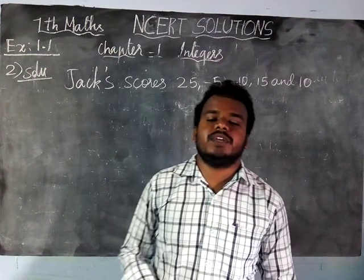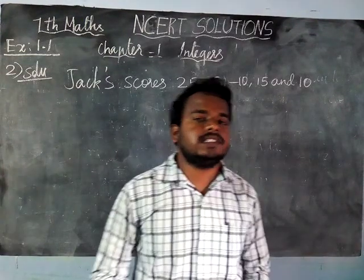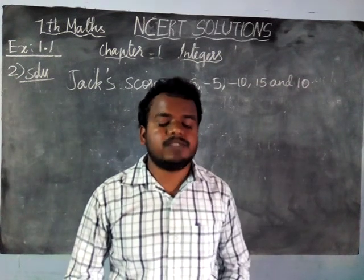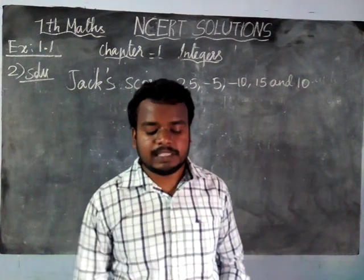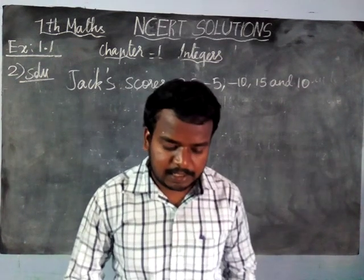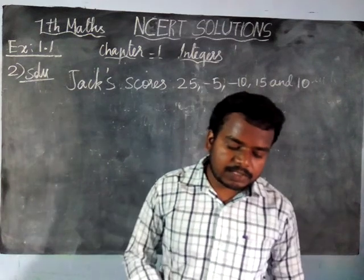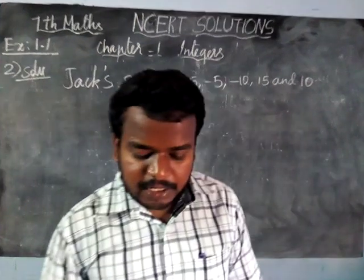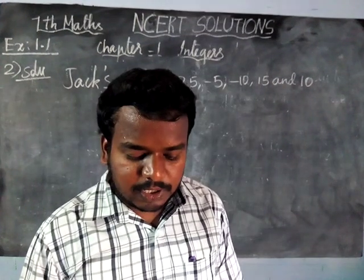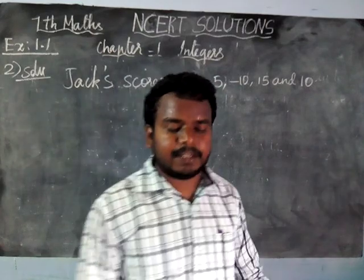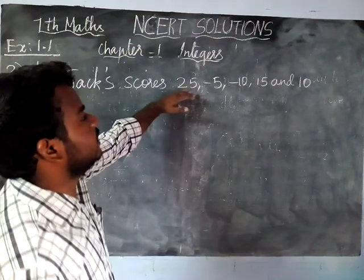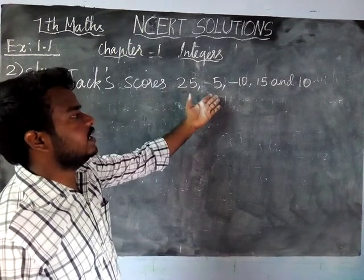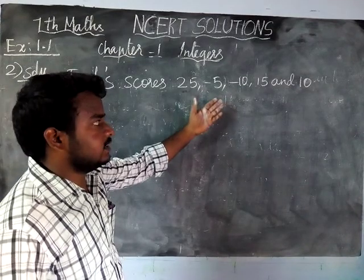Hi students, welcome to NCRT Solutions. Now we are going to see exercise 1.1, second question. In a quiz, positive marks are given for correct answers and negative marks are given for incorrect answers. So positive numbers are indicating correct answers, negative numbers are indicating wrong answers.